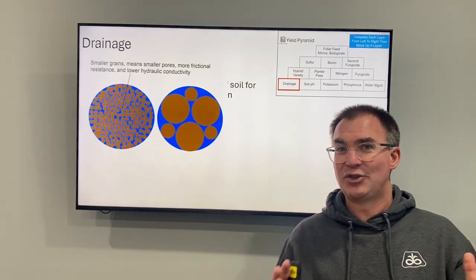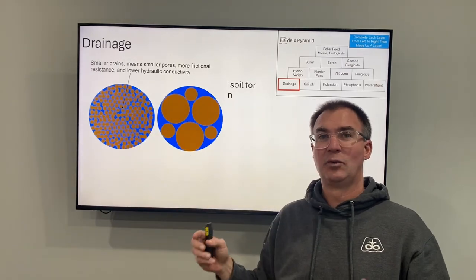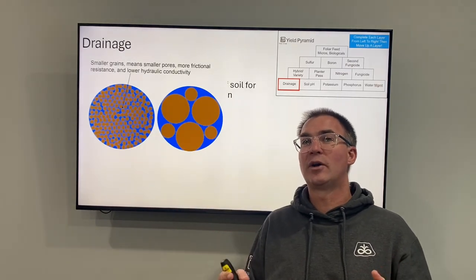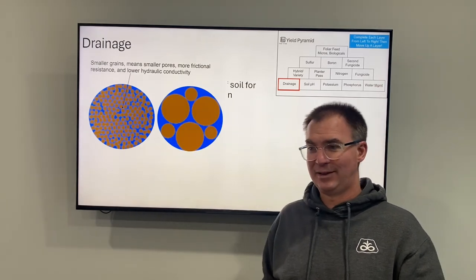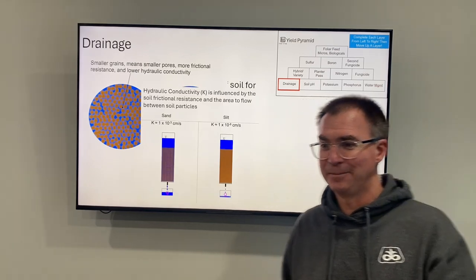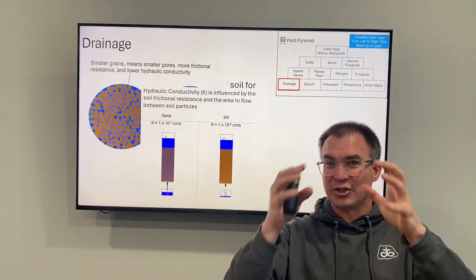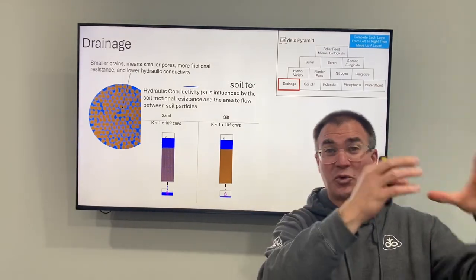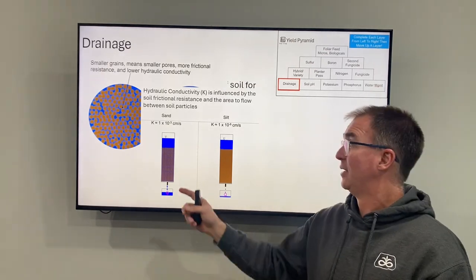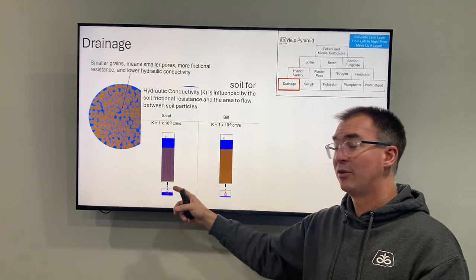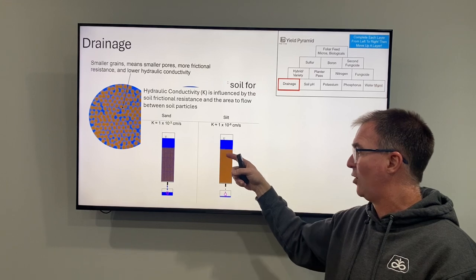It really is just as simple as: am I dealing with sand particles or clay particles? Which one has more ability for water to pass through? To get a little nerdy, it all comes down to hydraulic connectivity. Water has friction as it goes around particles — the more particles, the more friction, the slower the water moves. Sand gets more water through quicker versus clay or silt particles, which take longer to percolate all the way through.